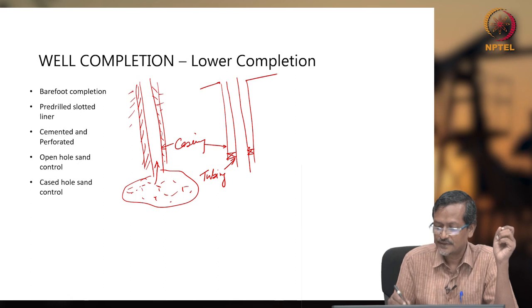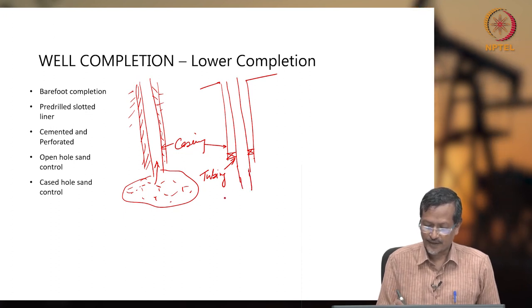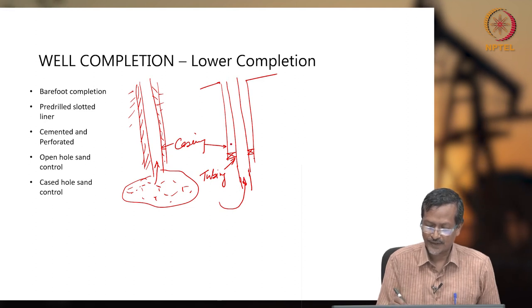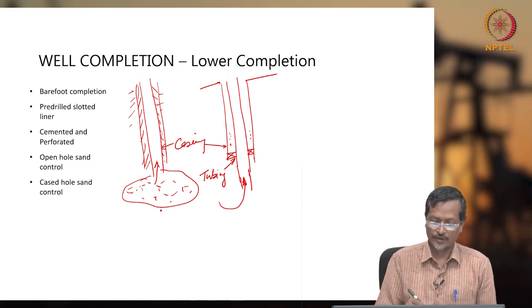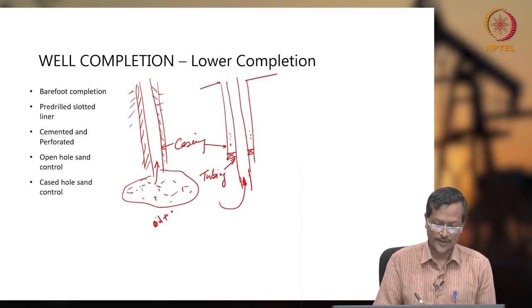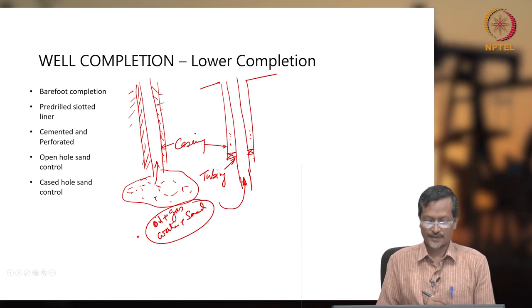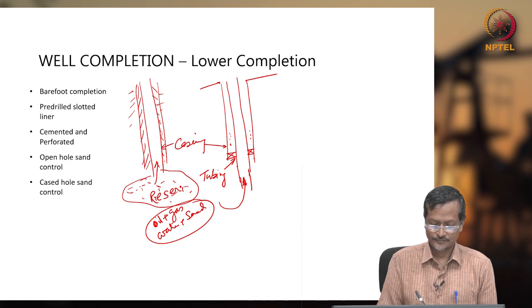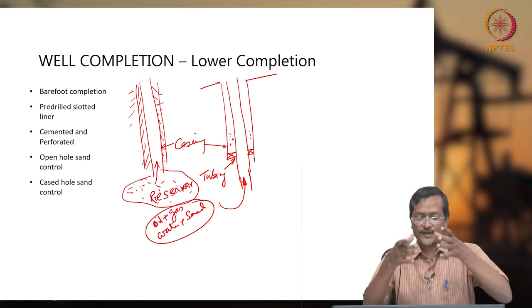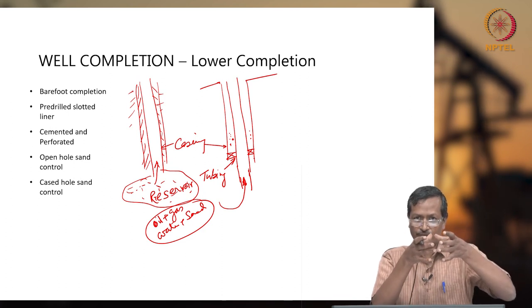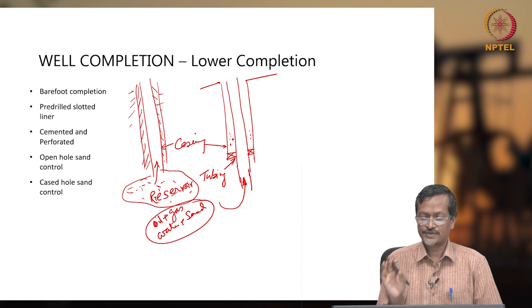What happens is the wellbore fluid will be entering here but it will not go to the annular area. The annular area will not be reached by the hydrocarbon or wellbore fluid. Wellbore fluid means oil plus gas plus water plus sand — four fluid items can be there. If you do not put a packer, then fluid will enter into the annular area between tubing and casing. Normally, people will put a packer or sealing arrangement so that fluid will not enter there. That area will be used for some other purpose.